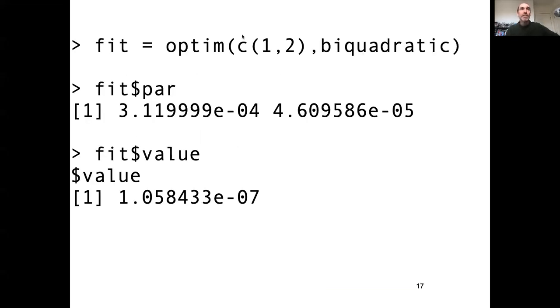So this, I now put an initial guess that is bivariate since I have two variables. Pass the function in and I get back two answers.